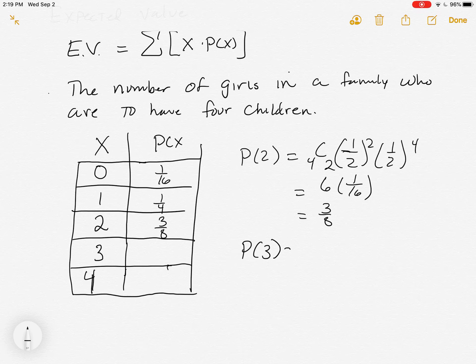Three. Probability of three being girls. C of 4, 3. One half to the third. One half to the first. So nice review over the last section stuff. C of 4, 3 is going to be four. And then we're going to have four times one sixteenth again. Right? One half to the fourth. And if that's the case, we're getting one quarter again. And the four is going to be one sixteenth again.